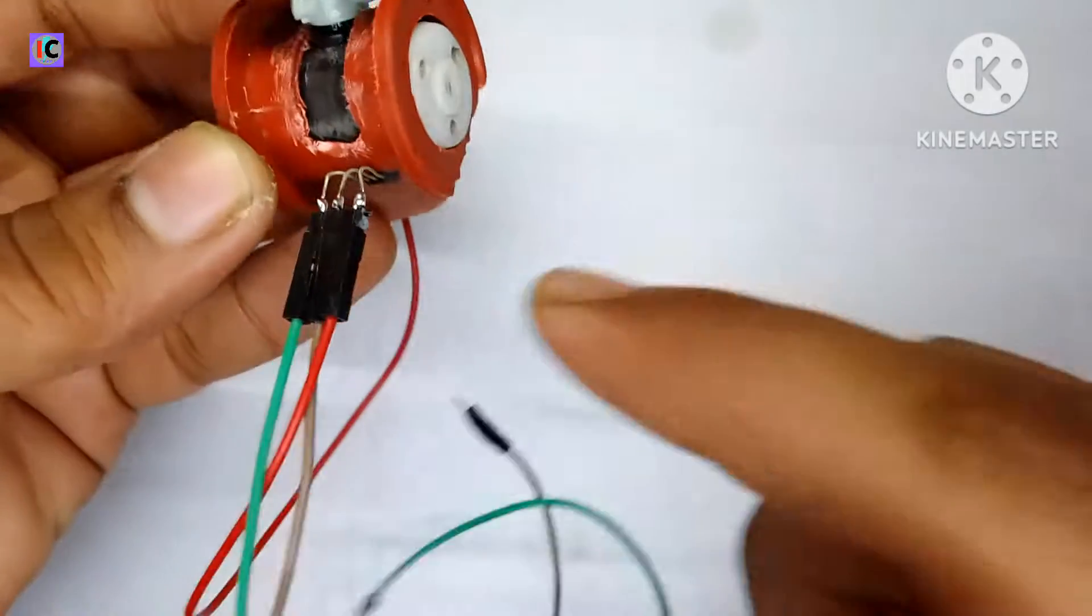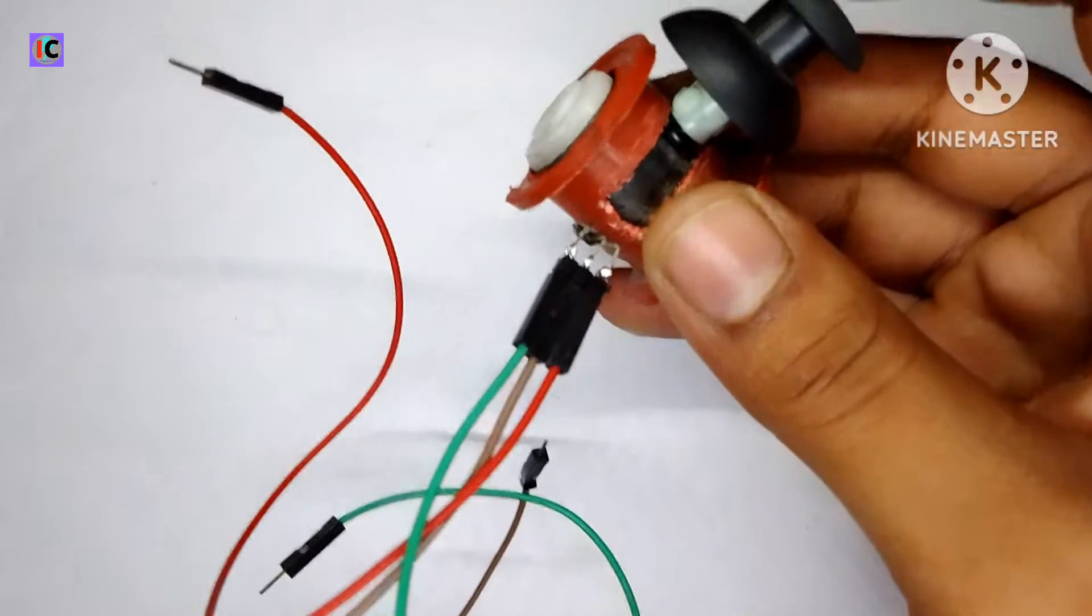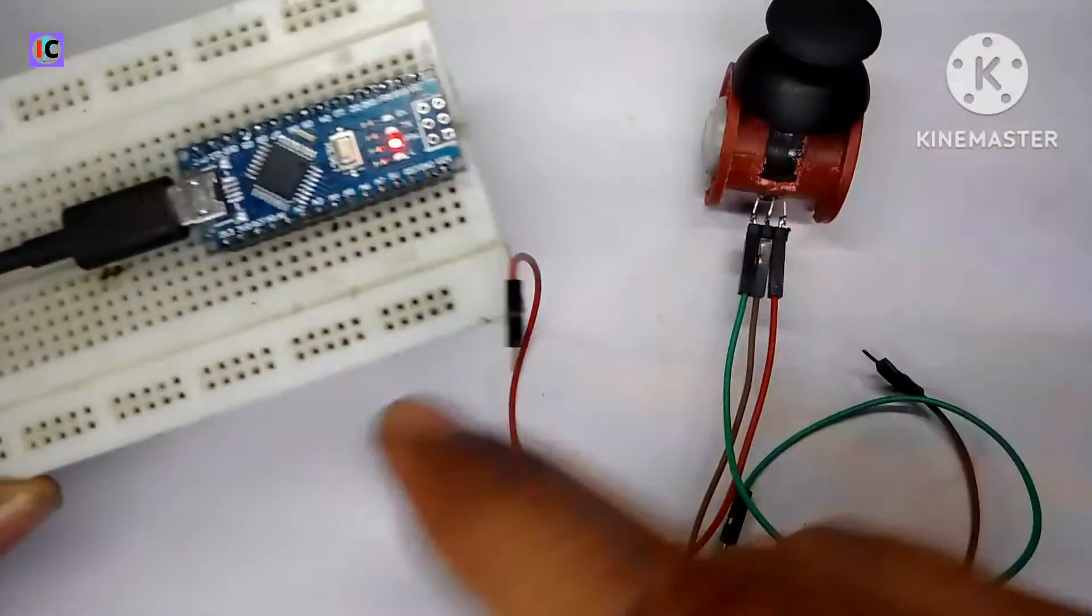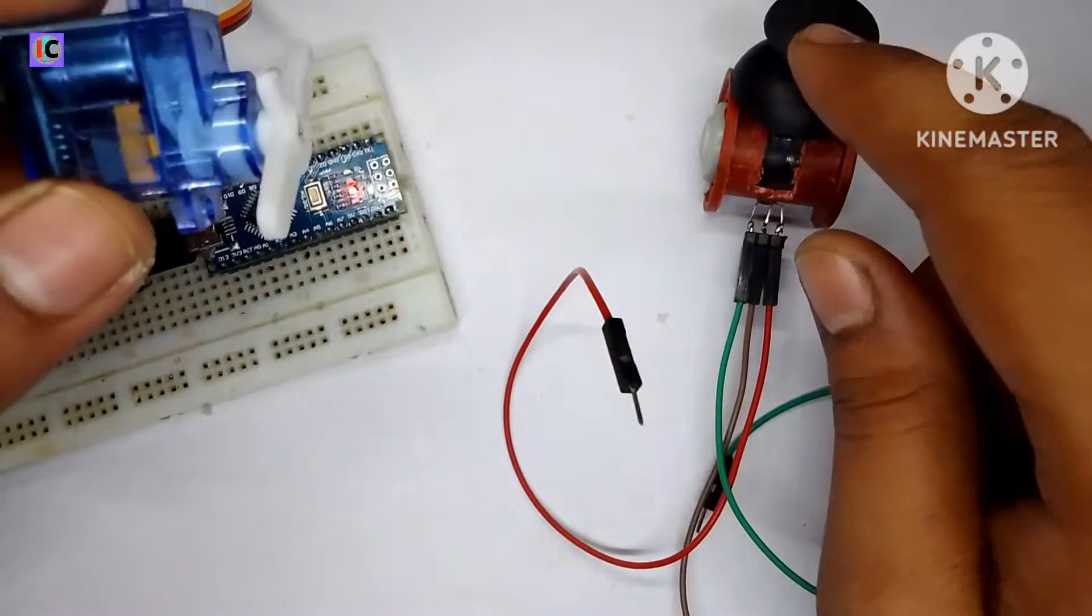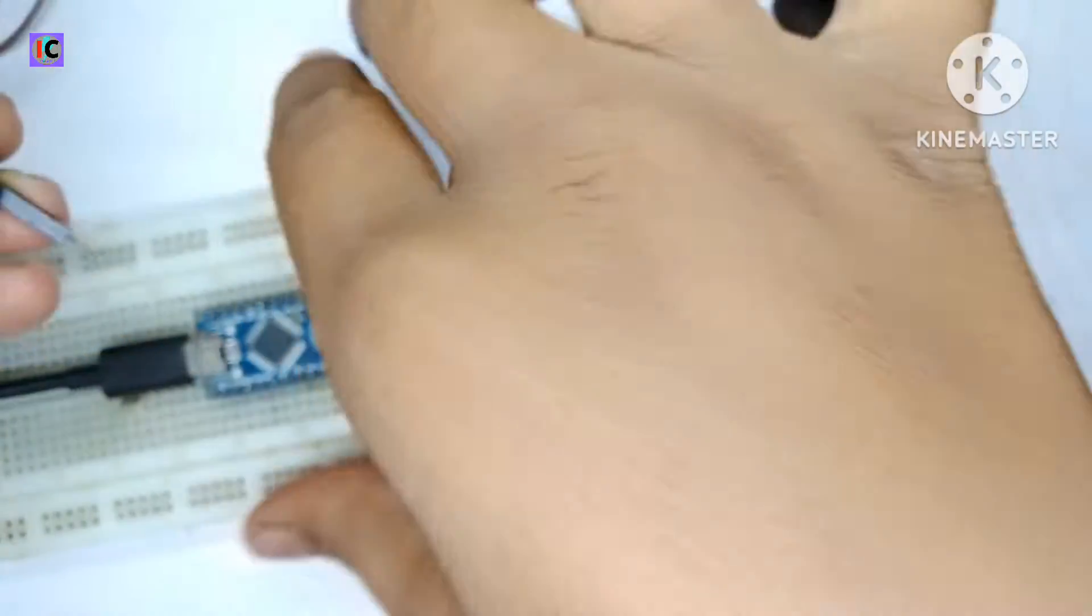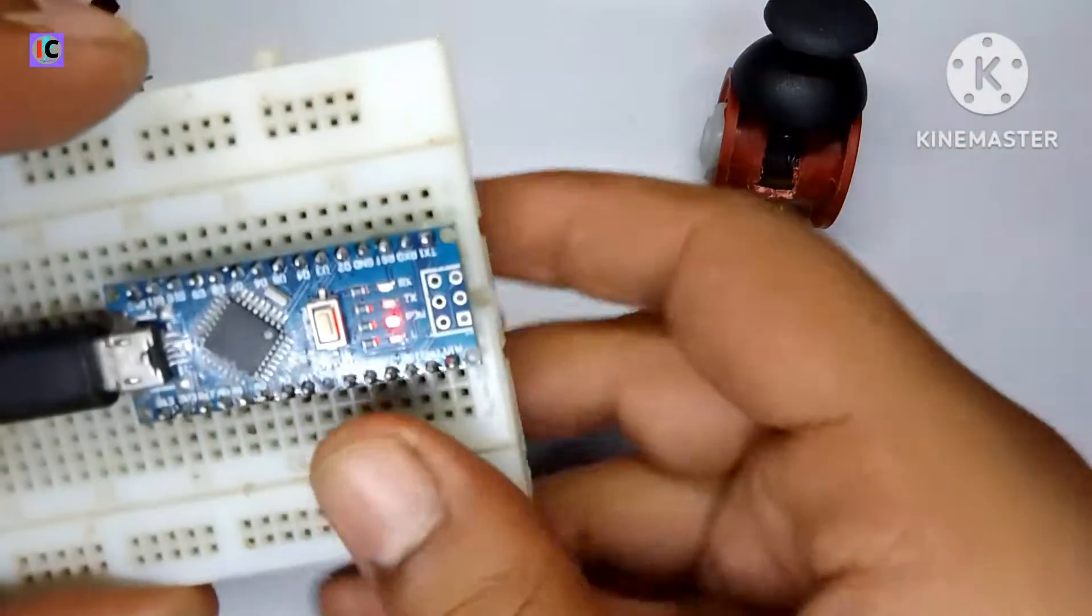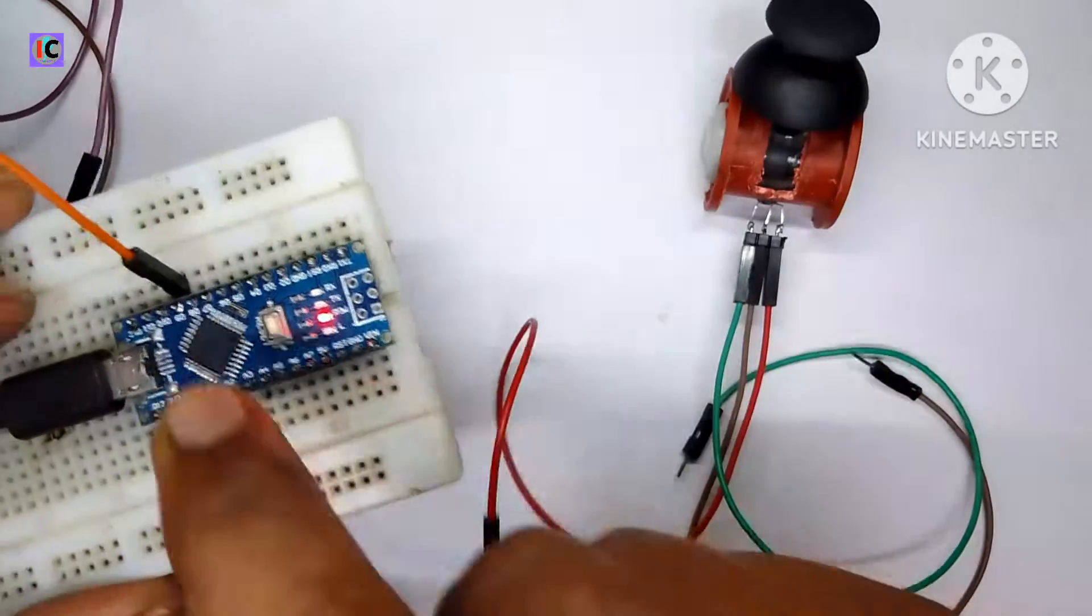For testing this joystick, I'm using the Arduino Nano and a servomotor. First we have to connect the servomotor to the Arduino Nano. You can see pin number 9, which is the D9 pin of this Arduino, is connected as the output. The 5 volt supply for the servomotor and ground are also connected.